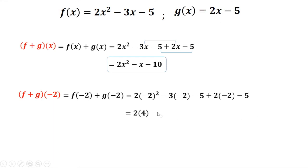Then you simplify. Negative 2 squared is positive 4. Negative 3 times negative 2 is positive 6, then minus 5. Then 2 times negative 2 is negative 4, and this one is negative 5.